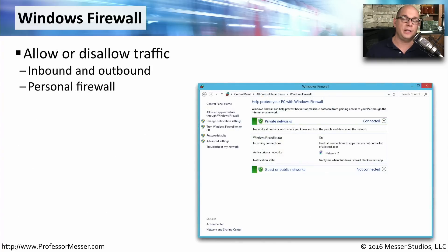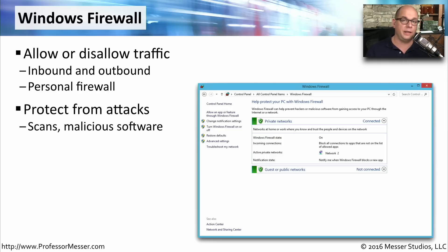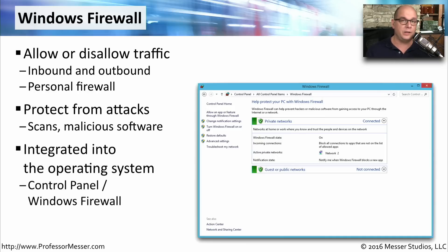Microsoft also includes a software firewall — sometimes called a personal firewall — called the Windows Firewall. This provides a way to allow or disallow certain types of traffic into or out of your computer, protecting you from outside attacks and preventing malware from communicating outside your PC. Since it's integrated into the operating system, there's nothing additional to install. You can find the configurations for Windows Firewall in your control panel under Windows Firewall.